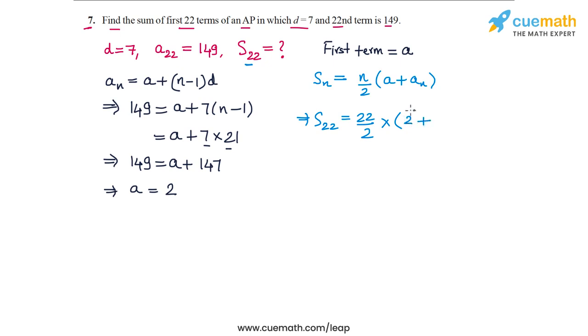And this means that S_22 will be equal to 22 by 2 into A plus the 22nd term. So A is 2. The 22nd term is 149. So 2 plus 149. So this is 22 by 2 is 11 into 2 plus 149 is 151. So 11 into 151.